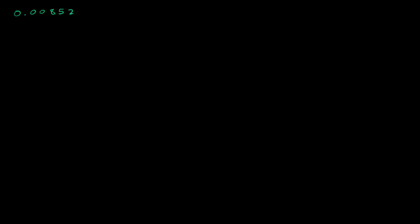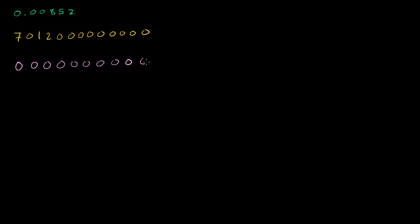Let me just write down a bunch of numbers. The first is 0.00852. The second number is 7,012 followed by many zeros. The next number is 0.0000000000005. I'll just draw a couple more — we're also doing 500.